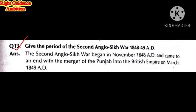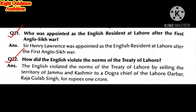Give the period of the Second Anglo-Sikh War. It lasted from November 1848 to March 1849. After the Second Anglo-Sikh War, Punjab was merged into the British Empire. Who was appointed as English Resident at Lahore after the First Anglo-Sikh War? Sir Henry Lawrence was appointed. How did the English violate the norms of the Treaty of Lahore? The British sold the territory of Jammu and Kashmir to King Gulab Singh.